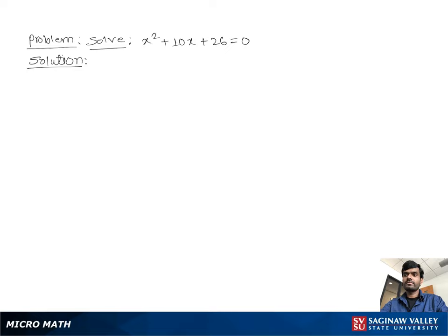Solve x squared plus 10x plus 26 equal to 0. We write x squared plus 10x plus 26 equal to 0, then move 26 to the other side as negative 26, giving x squared plus 10x equal to negative 26.